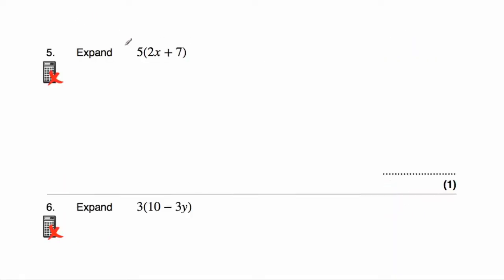Question number five asks us to expand 5(2x + 7). We need to multiply what's inside the brackets by five. Five times 2x — five times two is ten — so it'll be 10x plus. And five times seven would be thirty-five. The answer is 10x + 35.